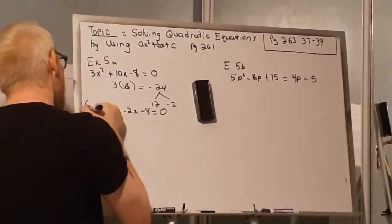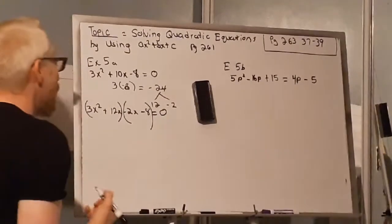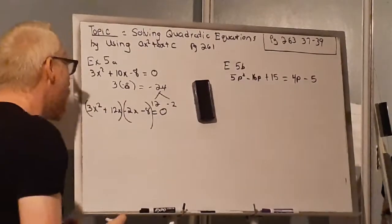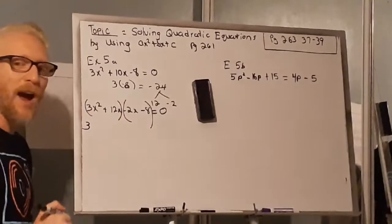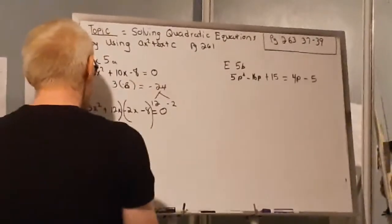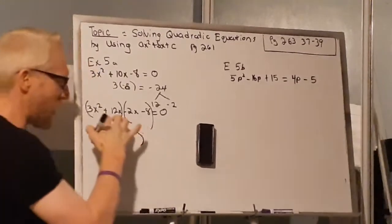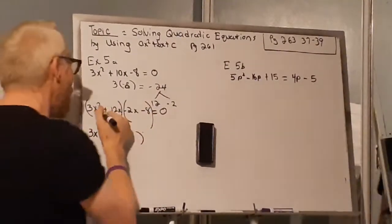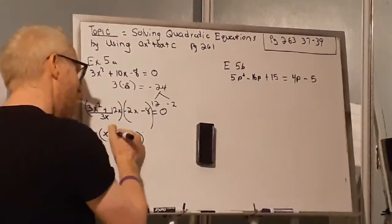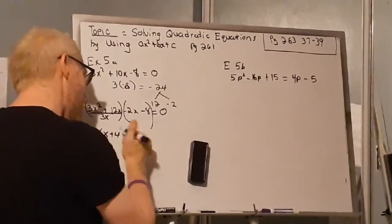After that we're going to factor by grouping, which means putting everything into two separate parentheses. We're going to look at 3x² and 12x — what is the common factor between them? It's 3x. So I have 3x times something, and dividing by 3x: 3x² ÷ 3x = x and 12x ÷ 3x = 4. So on one side I have 3x times (x + 4).